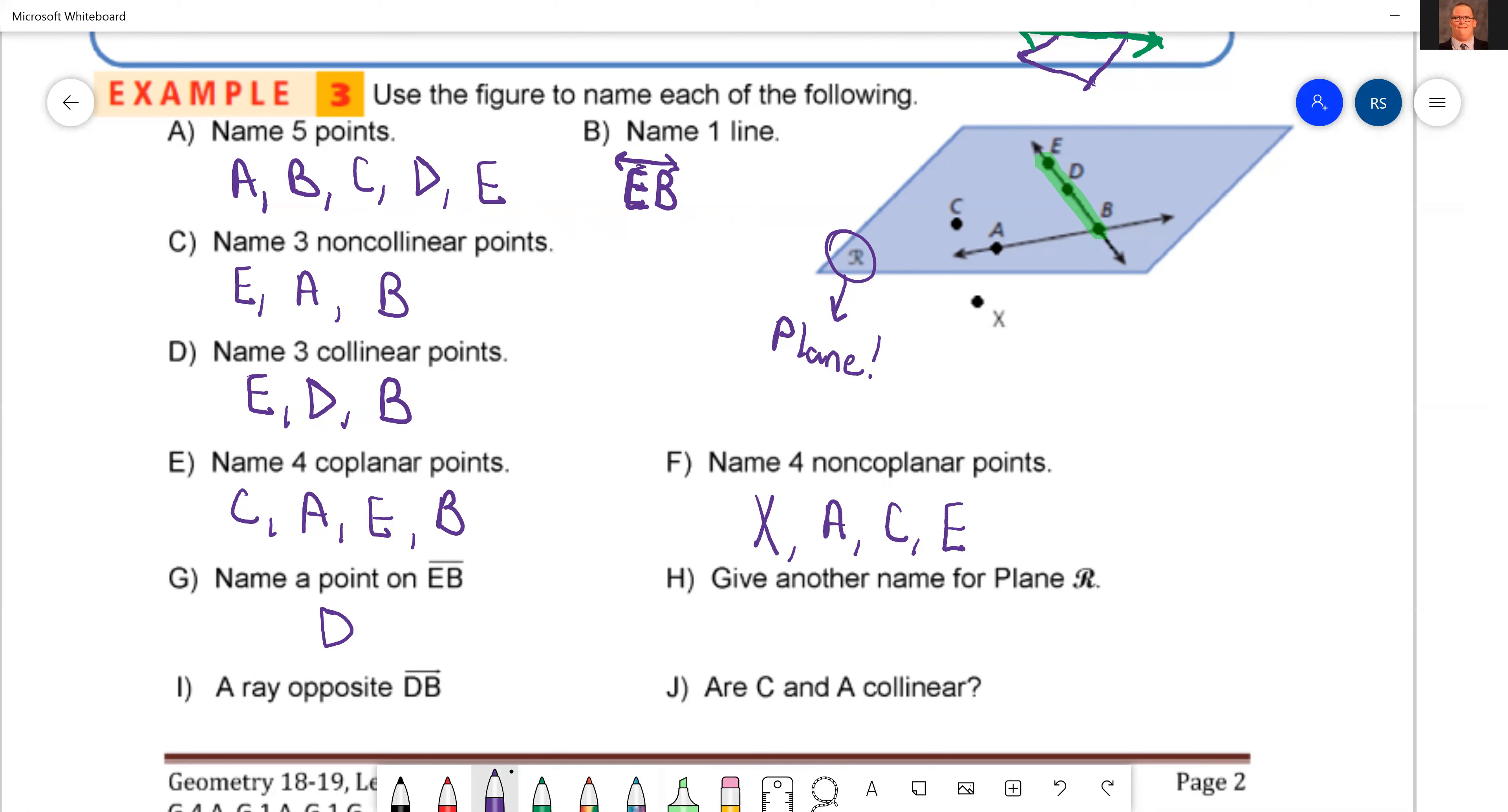Next one says give another name for plane R. Remember, if you tell me E, D, B, it's wrong. They can't be on the same line. So I'm going to say plane, I'll just go with ACE again. Plane A, C, E. They're not all on the same line, so we're okay.